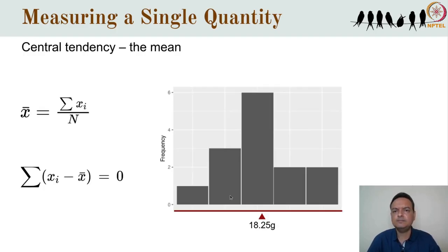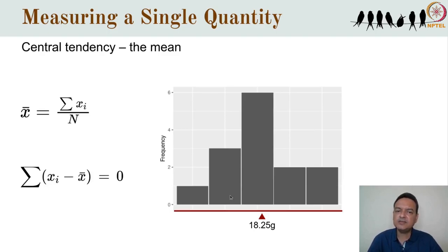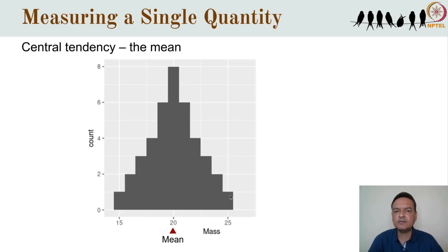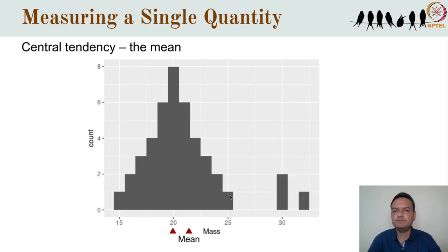What exactly is the mean? Mathematically it's the sum of all observations divided by the sample size. Conceptually it is the center of gravity of a histogram — if the histogram were like a seesaw, the mean would be the point that perfectly balances the two arms. The sum of all the negative deviations from the mean exactly equals the sum of the positive deviations. The implication is that the addition of just a few extreme numbers can affect the mean considerably.